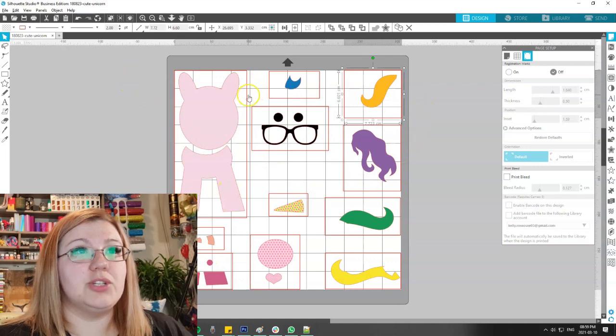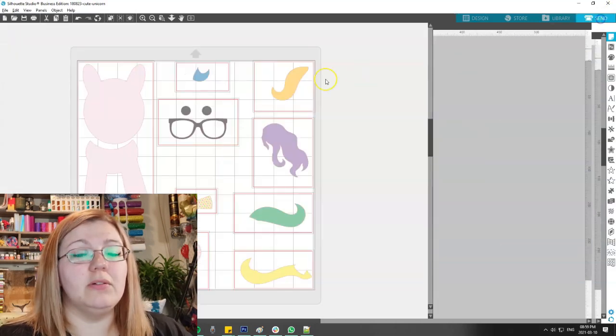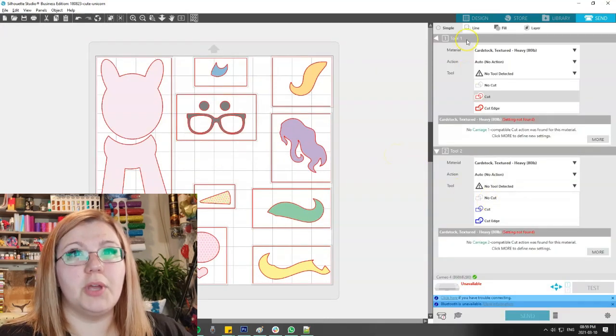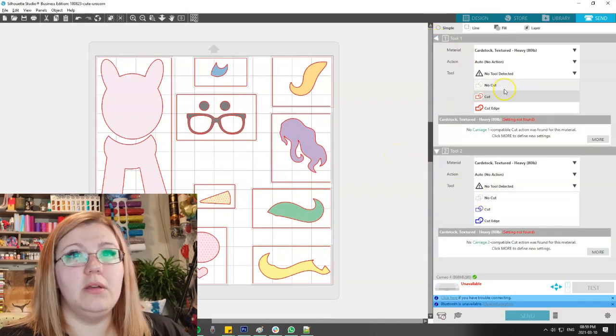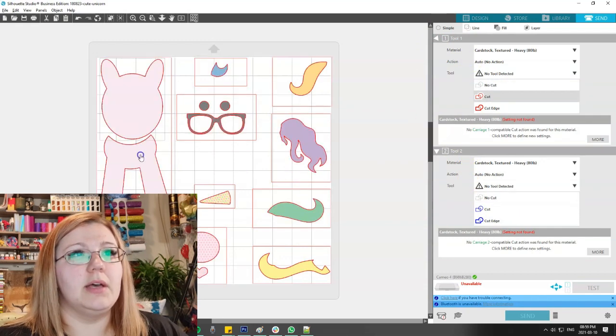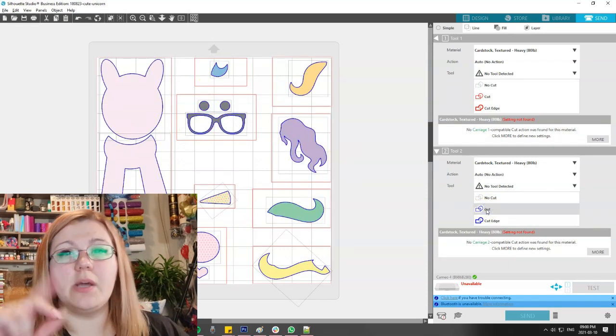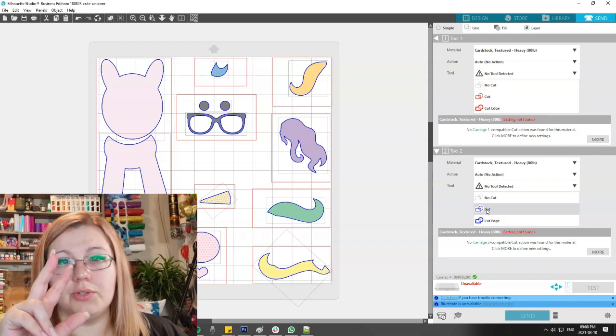A very important thing that we need to do is to select all of the boxes and go into the send panel and turn the cut lines off for these boxes. So because we're not going to be using tool one we're going to select no cut, but then what we will do for the rest of the items is select cut on tool two. That's how we switch between the two tools.